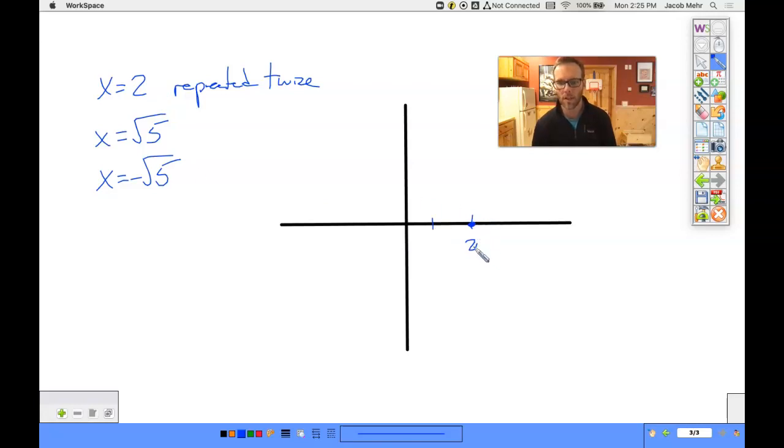Now the square root of 5 is just a little bit bigger than 2, right? So there's the square root of 5 right there. And the negative square root of 5, right about there.